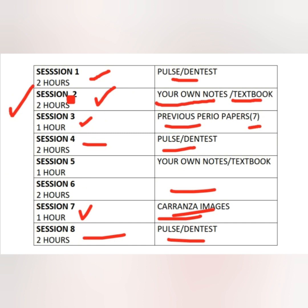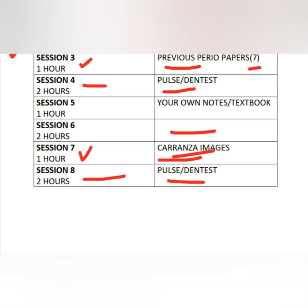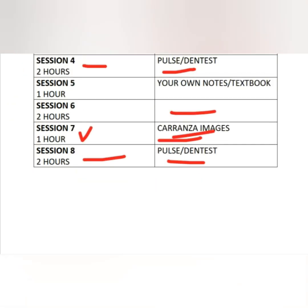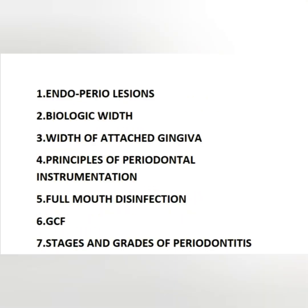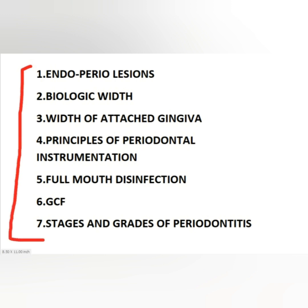The sixth session covers very important topics that might be missed in your Dentist or Pulse, or not taught in coaching institutes. There are seven key topics. The first is endo-perio lesions — how to diagnose primary endo secondary perio, and primary perio secondary endo: what parameters to look at and what the treatment plan is.